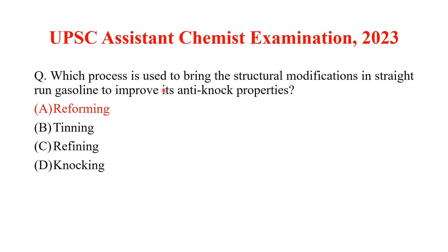Which process is used to bring structural modification in straight run gasoline to improve its anti-knock properties? Conversion of straight chain hydrocarbons into branched hydrocarbons is known as reforming. It will improve the anti-knocking properties. So, the answer to this question is option A.